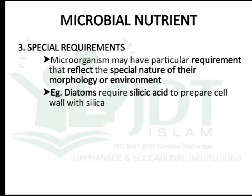Special requirements: sometimes along with macronutrients and micronutrients, some microorganisms have particular requirements reflecting their special morphology or environment. For example, diatoms require silicic acid to prepare their cell wall with silica. Without silicic acid, they will not produce silica in their cell wall — so it is a special requirement for them.